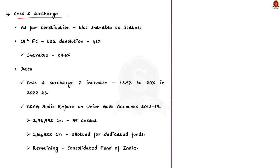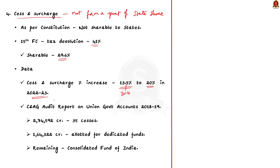The center has been resorting to the levy of cesses and surcharges instead of taxes, because cesses and surcharges are not shareable with the states under the Indian Constitution. As per the 15th Finance Commission recommendation, the state share in central taxes was 41%. But because of the increase in the levy of cesses and surcharges, states will only get a share of around 30%. The share of cesses and surcharges in the gross tax revenue has increased from 13.5% in 2014 to 20% in the budget estimates for 2022-23, reducing the revenue to be shared with states.